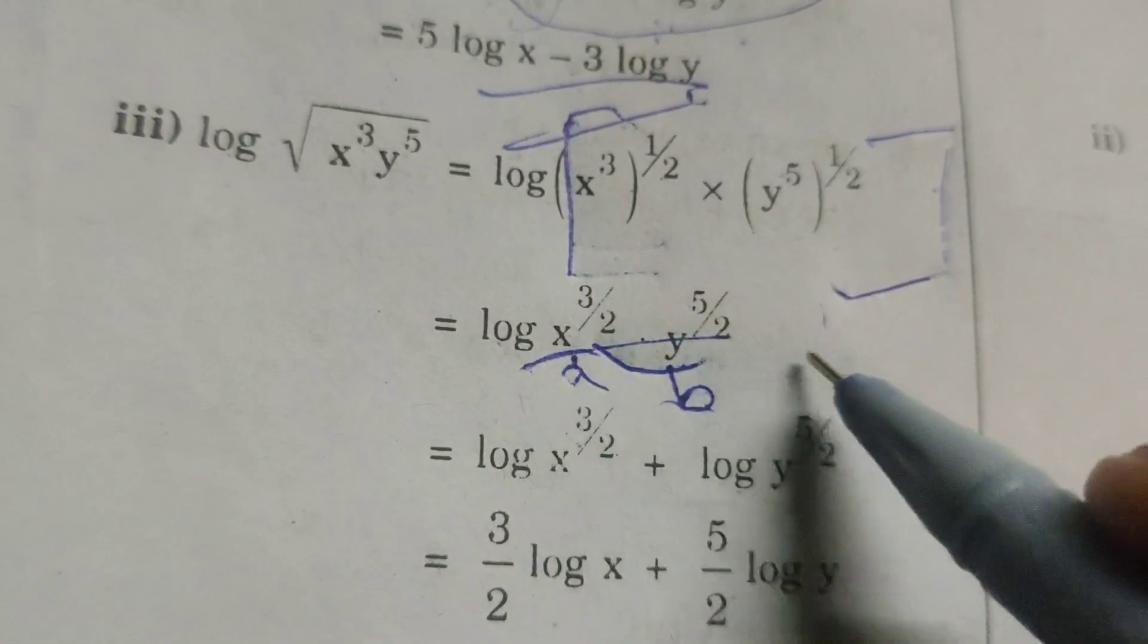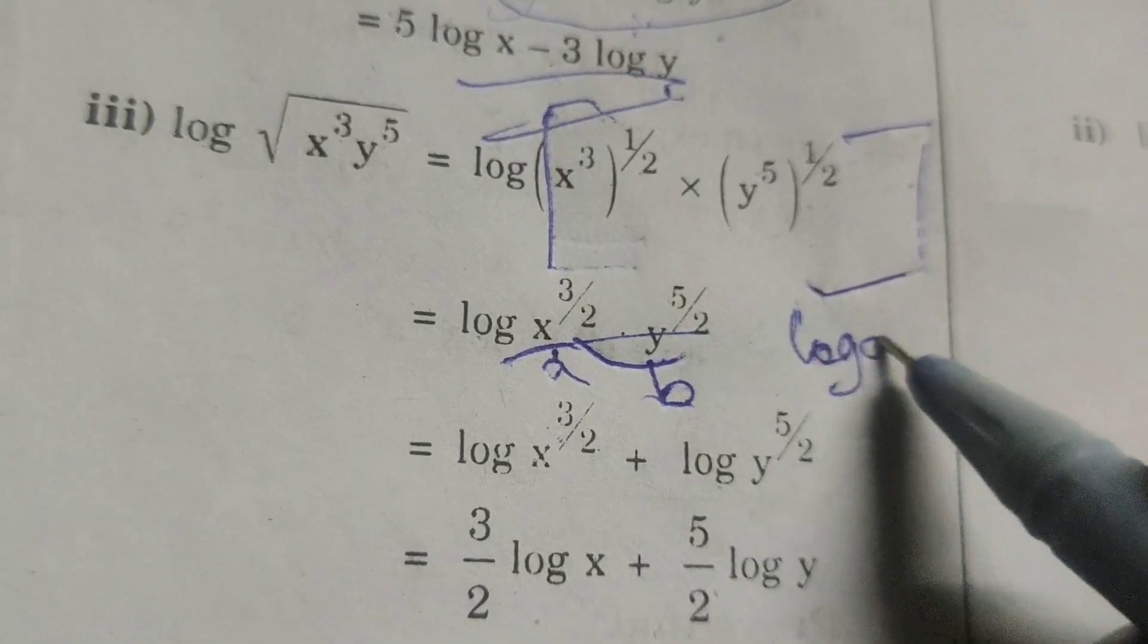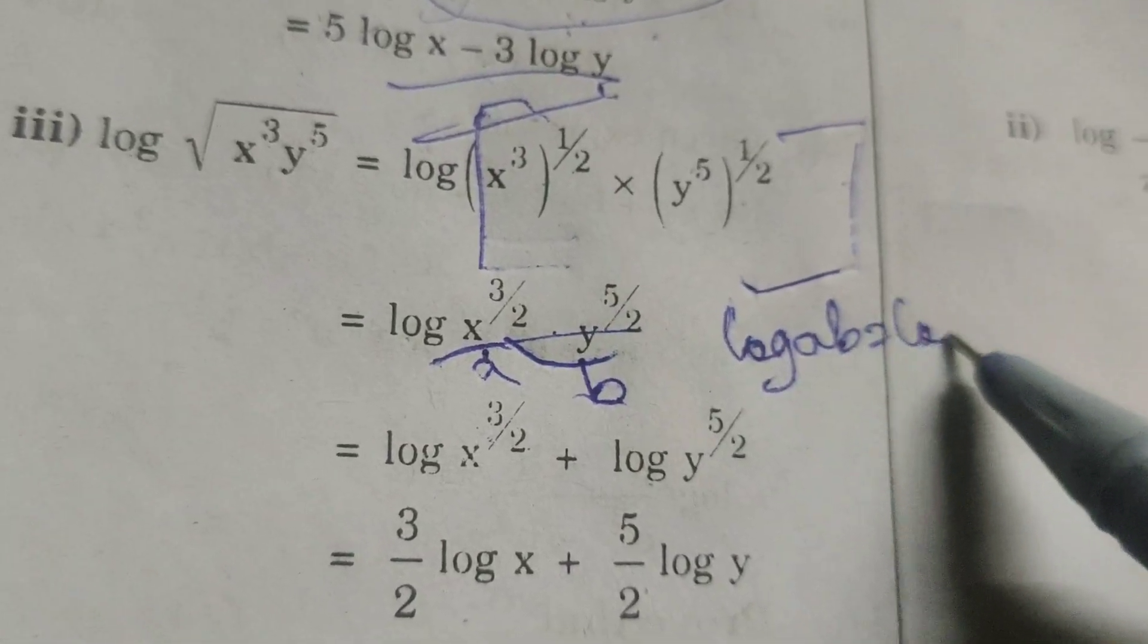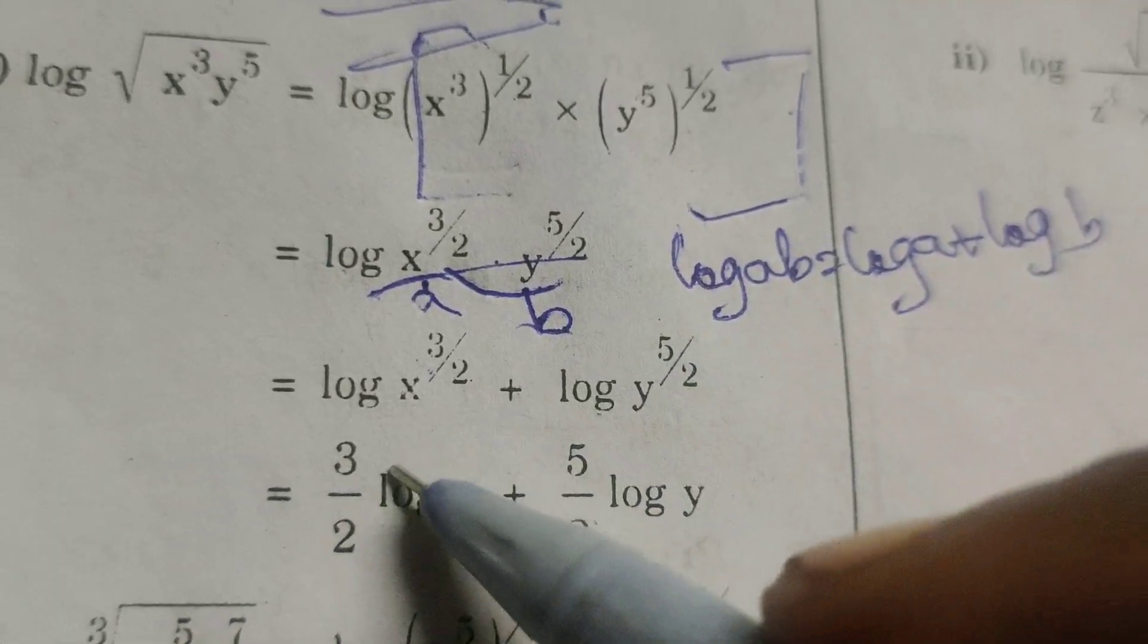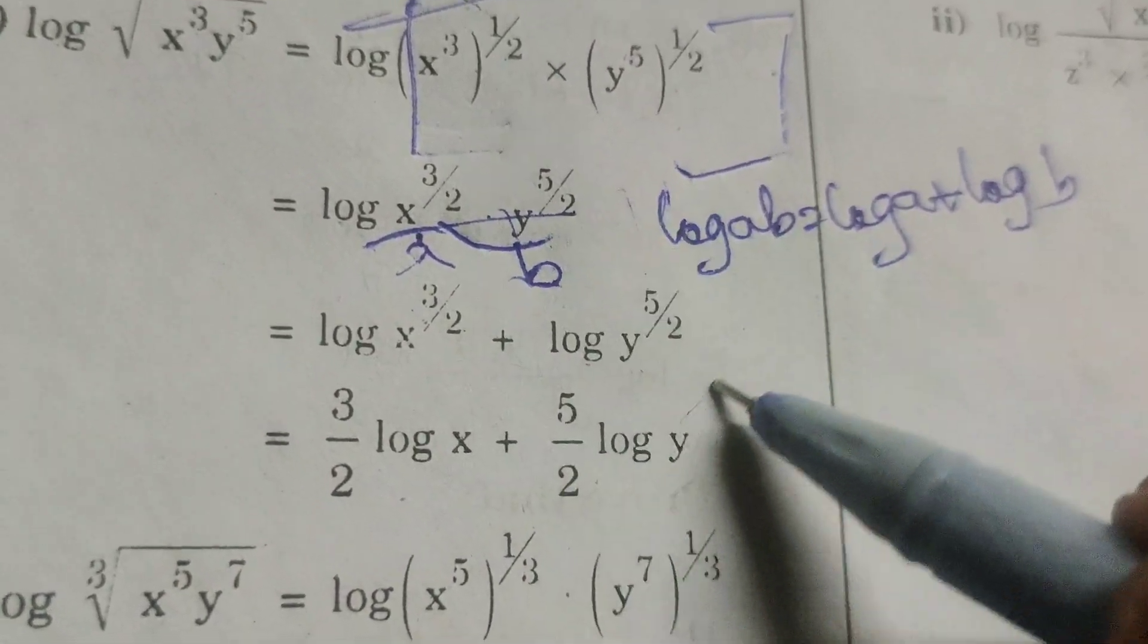Applying the formula log ab equals log a plus log b. Therefore log x power 3 by 2 plus log y power 5 by 2.